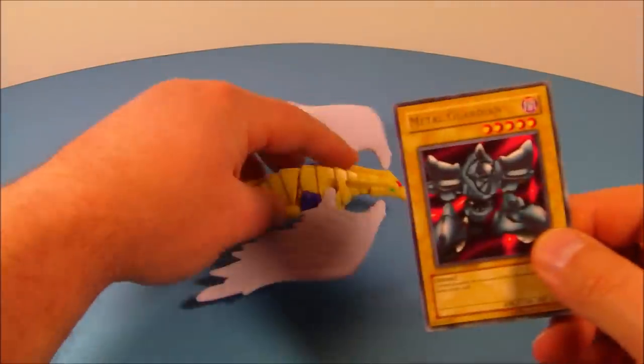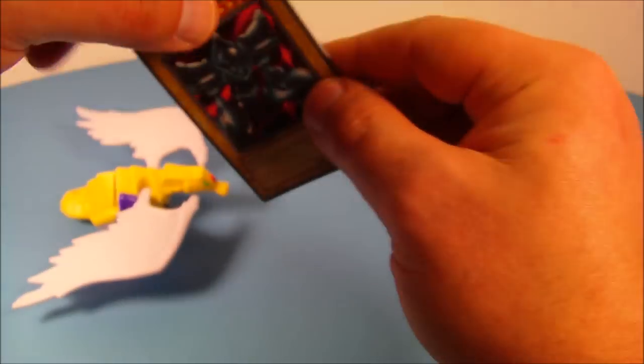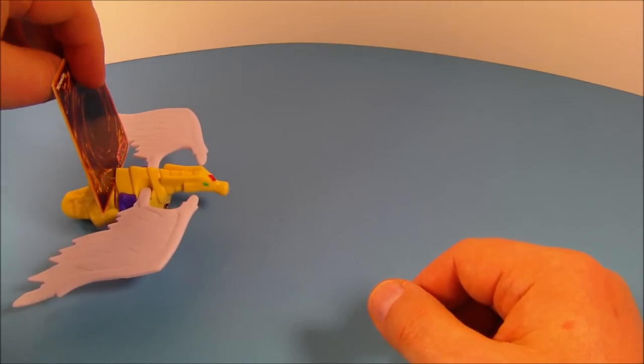So what you do is once you pull them back just like so. Get them wound up a little bit. Just like this. And you have a slot right here in his back. You put the card in and watch him go.